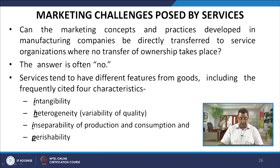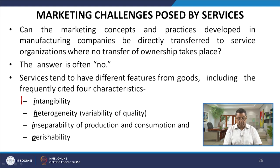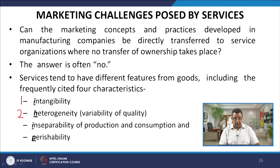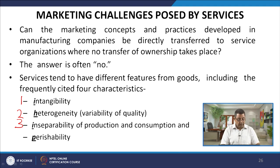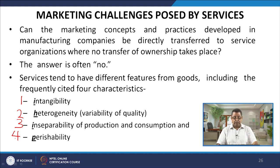The first characteristic is intangibility. The second is heterogeneity, meaning variability of quality. The third is inseparability of production and consumption — either the person or possession must be present for services to be delivered. The fourth is perishability. These four characteristics are frequently cited and can be used to differentiate between goods and services.